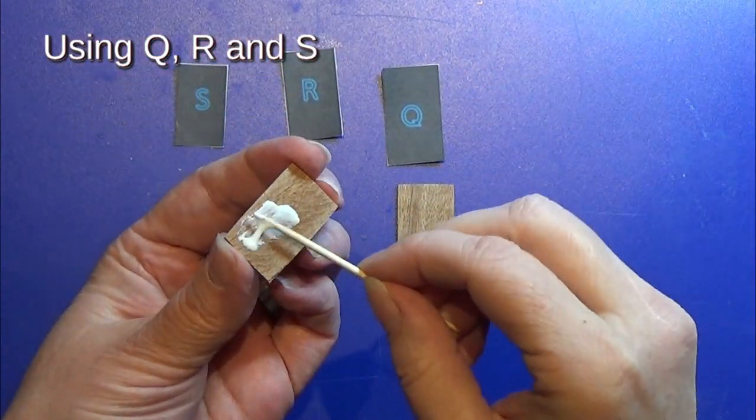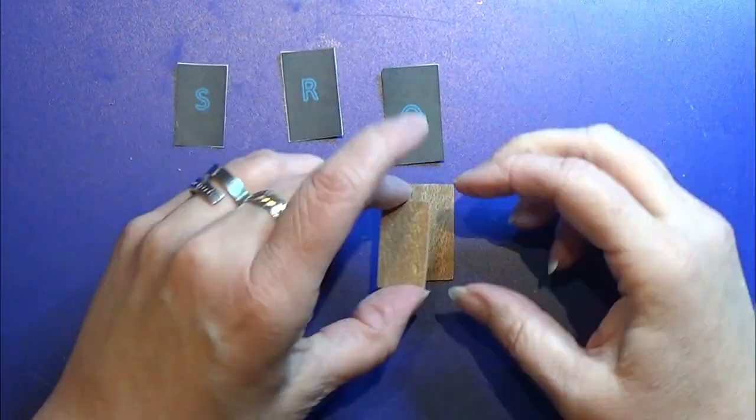I'm gluing Q, R, and S together, and I'm doing that with a flush back side.